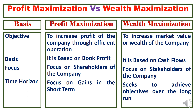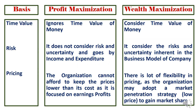When it comes to time horizon, profit maximization focuses on gains in the short run — profitability is calculated for one year, hence it is a short-run concept. Whereas wealth maximization seeks to achieve long-period objectives, selecting investment proposals that give benefits over a long duration.